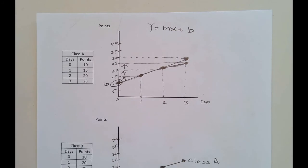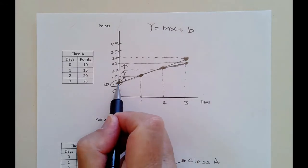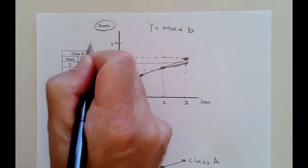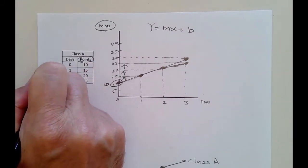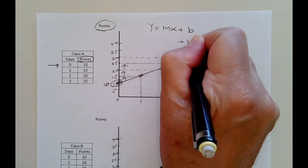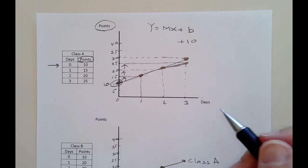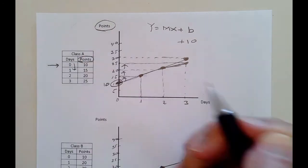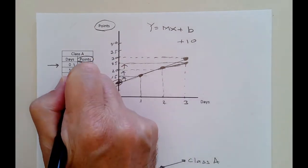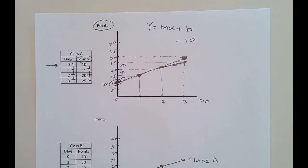Now we can get an equation of this line. The b is the y-intercept — where it starts from — the value of the y variable when x is 0. That's the starting point for class A: if they don't come to class at all, they get 10 points by guessing or reading the book. So b is 10. The slope is the increase in y when we add one more unit of x. From 0 to 1, it goes up by 5 points, and each additional day adds 5 more points. So the slope is 5.